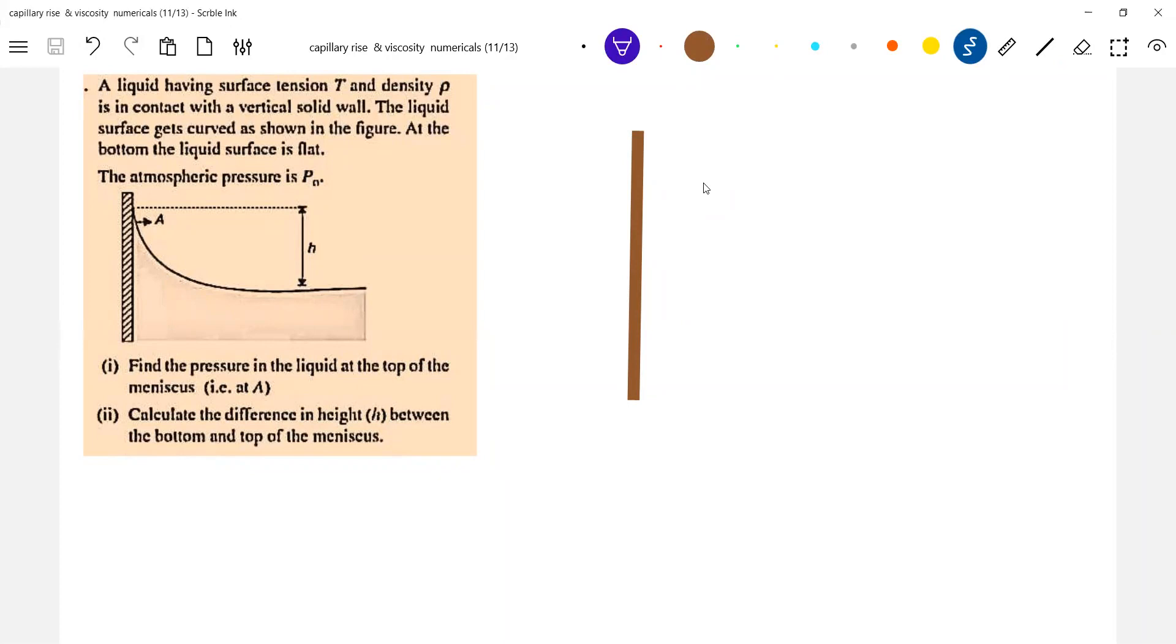Let me show the meniscus. Everything is liquid. Fine. Okay, now read the question. It's asking to find the pressure and calculate the difference in height between the bottom and the top of the meniscus. So what is the meniscus? You're seeing this particular blue color line is the meniscus.